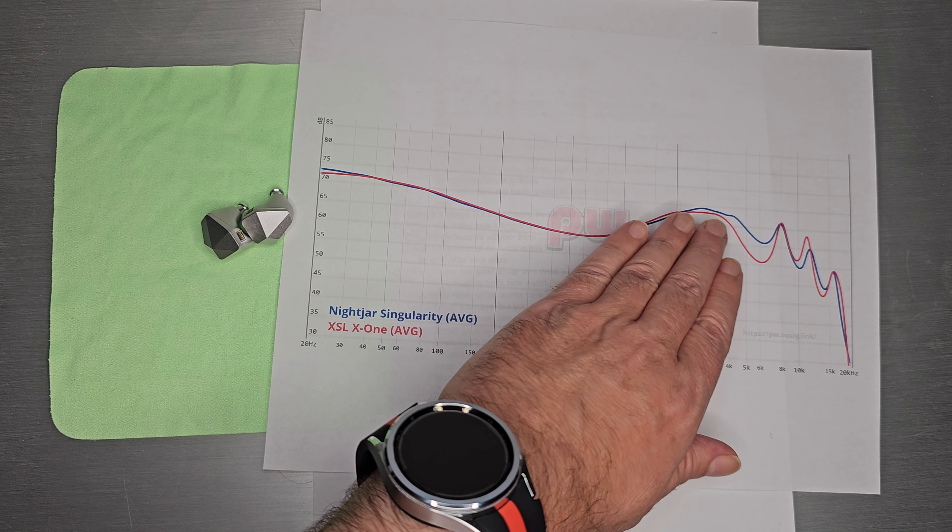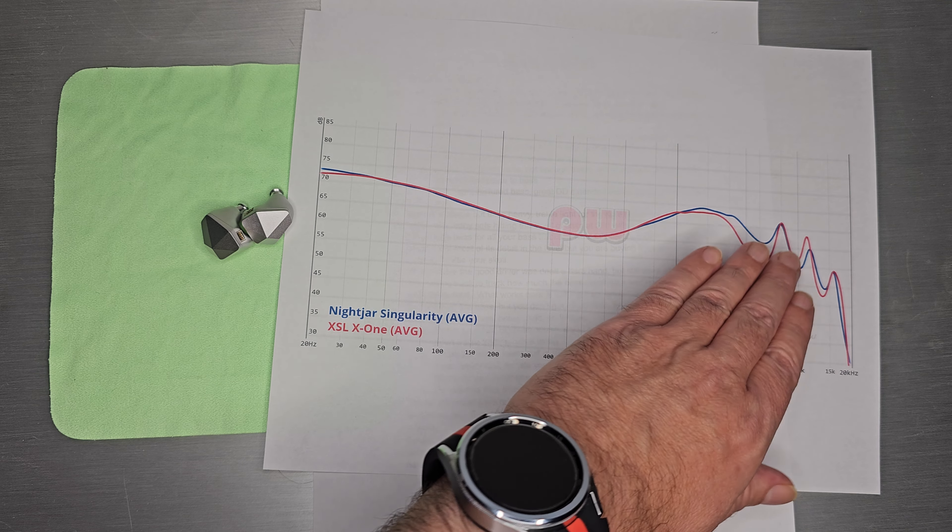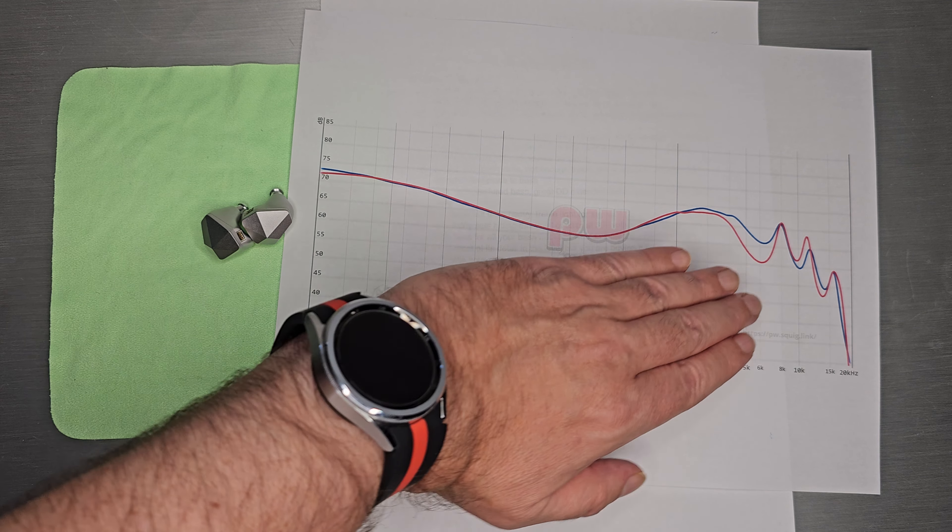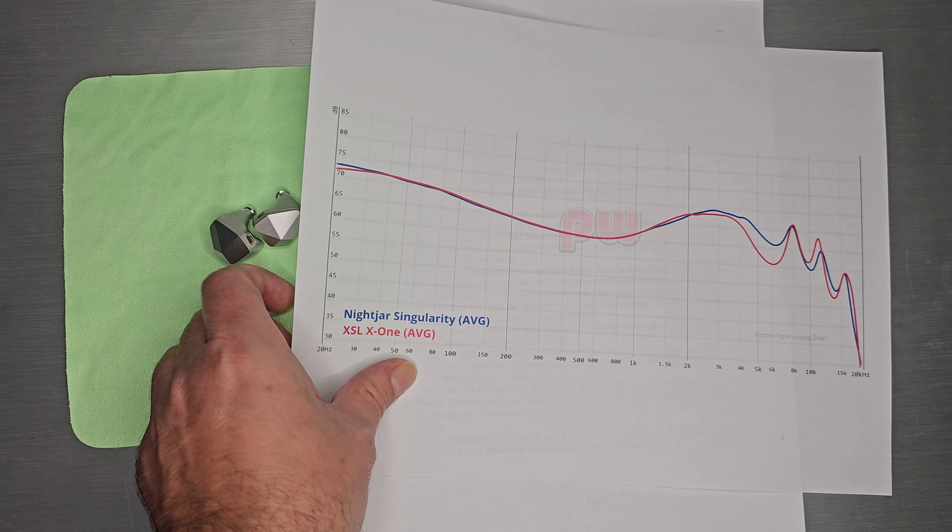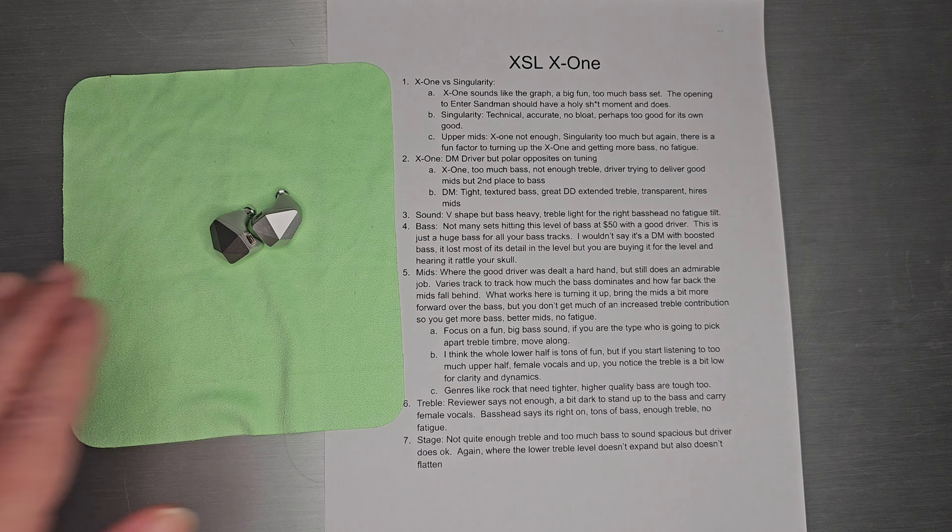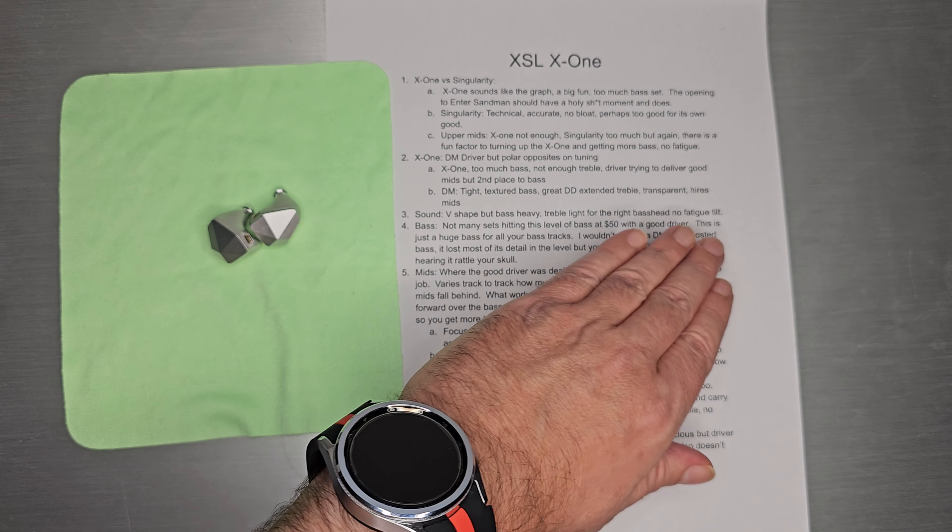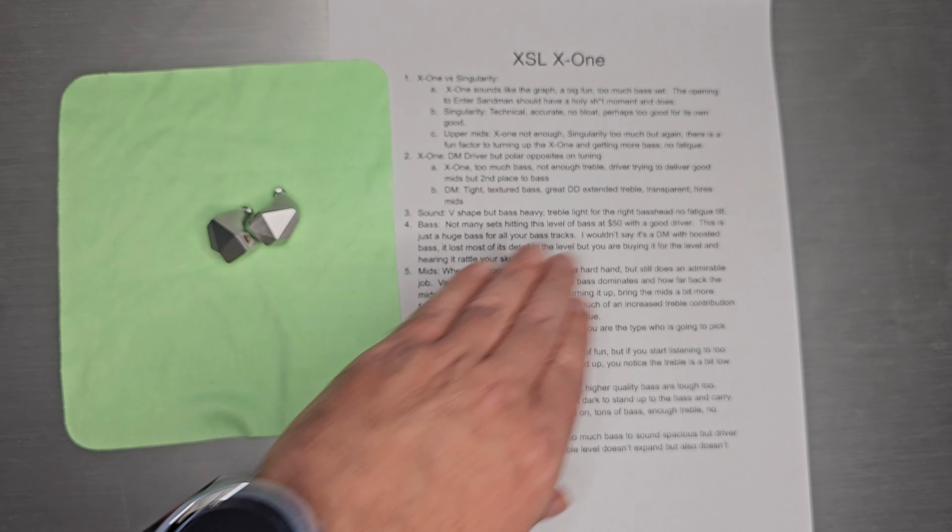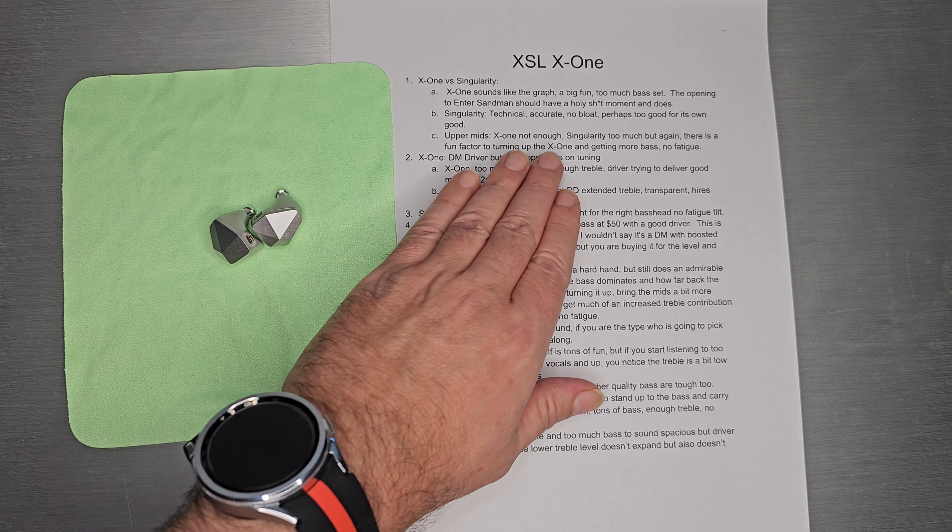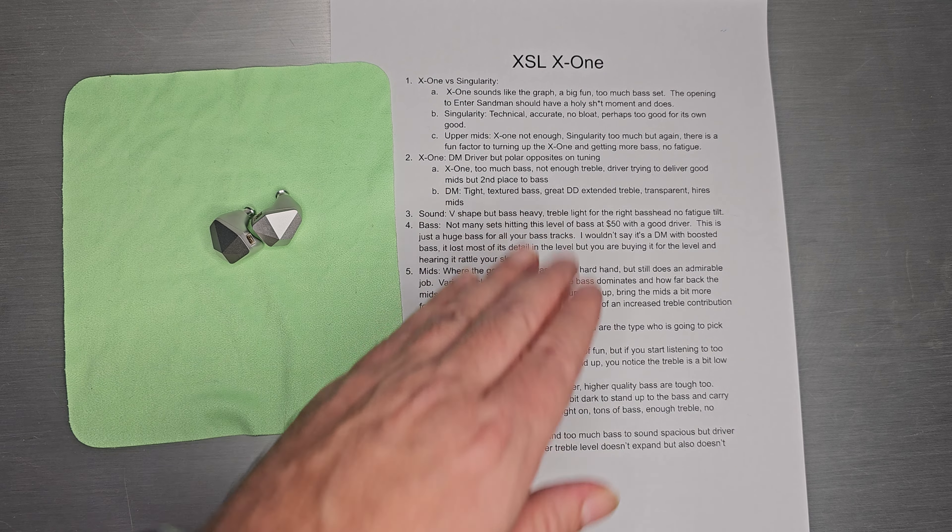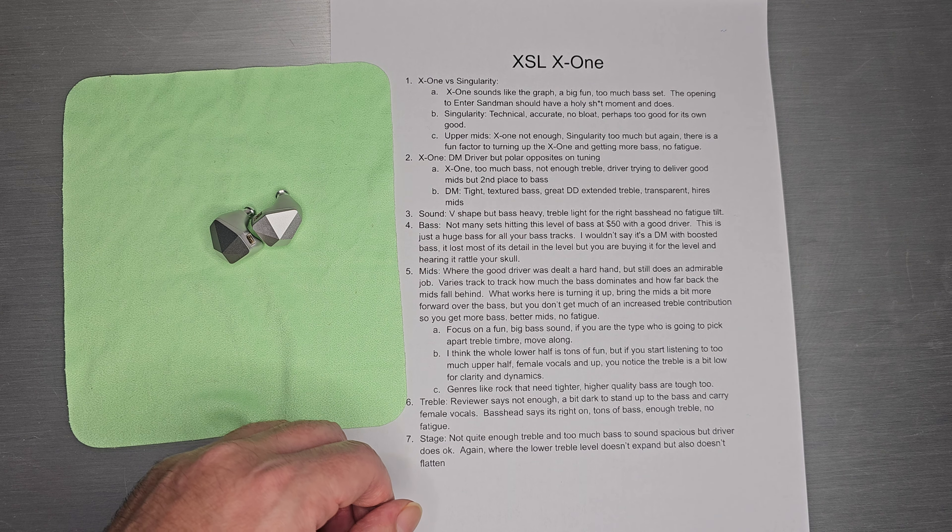It's a huge bass and then this is brought down slightly so there's no real fatigue in the treble. The whole thing is tilted in a very nice bass head style, so you can really turn it up. Singularity has a little bit too much. There's kind of a fun factor to turning up the X-1 and getting more bass, no fatigue. I think they actually did that tilt pretty well on X-1.